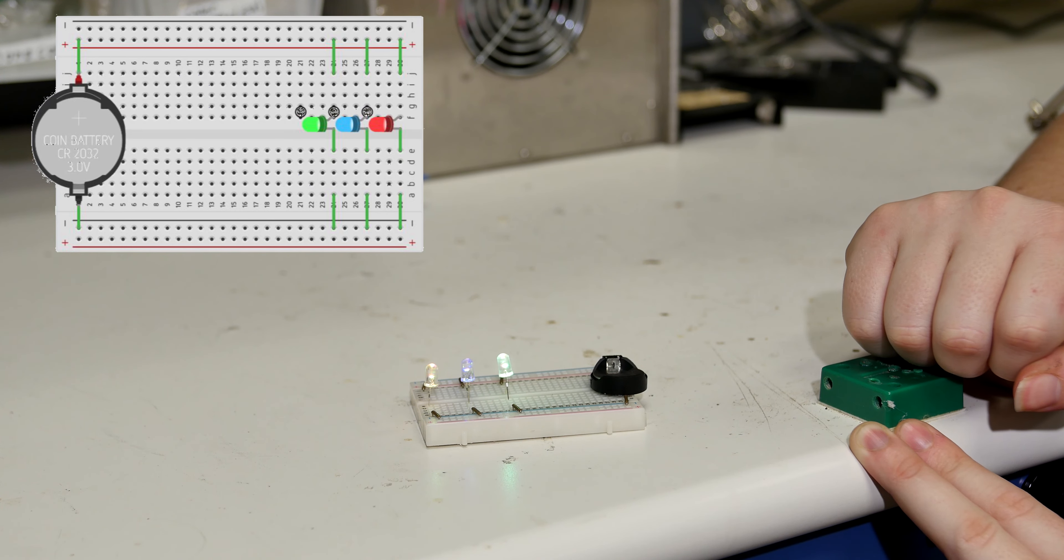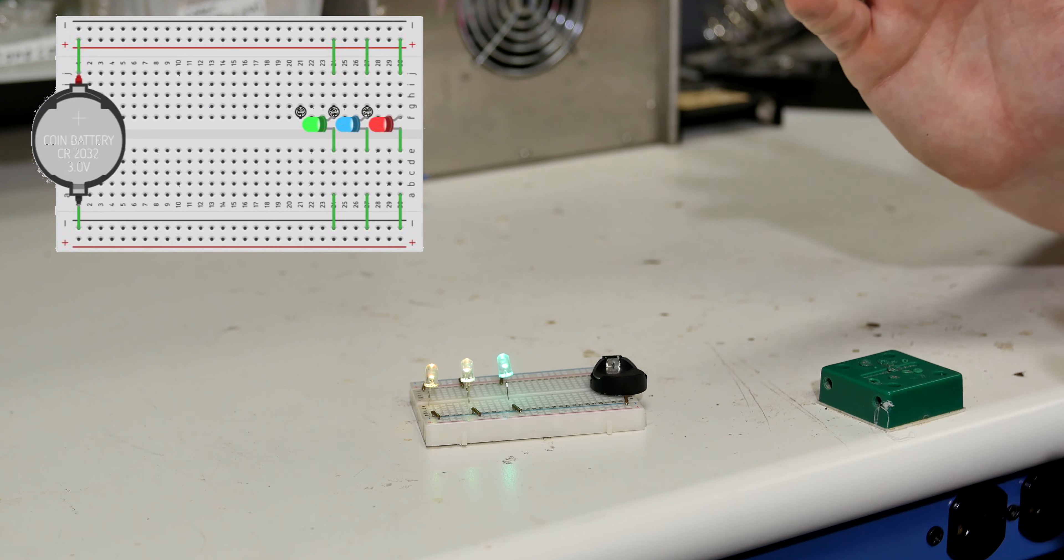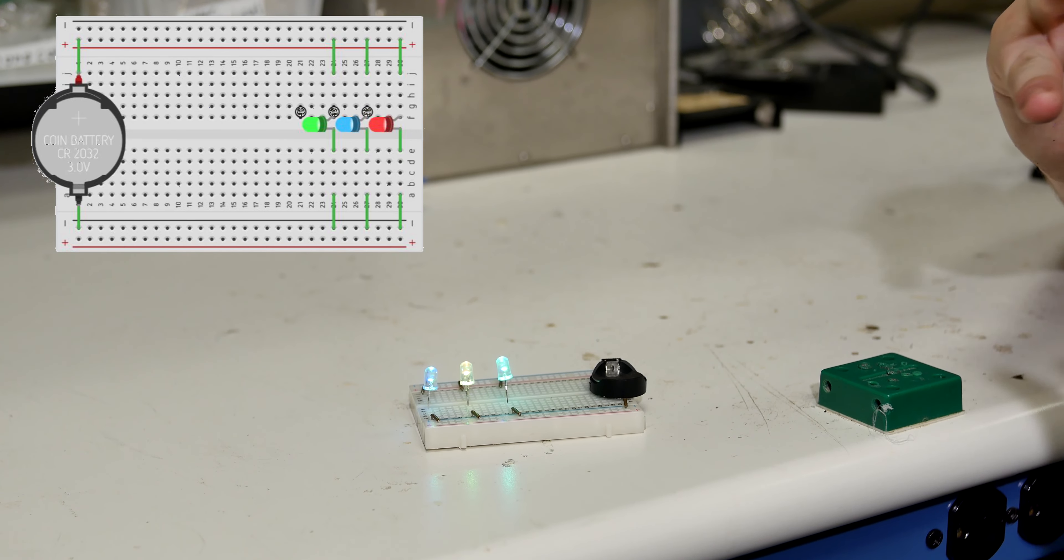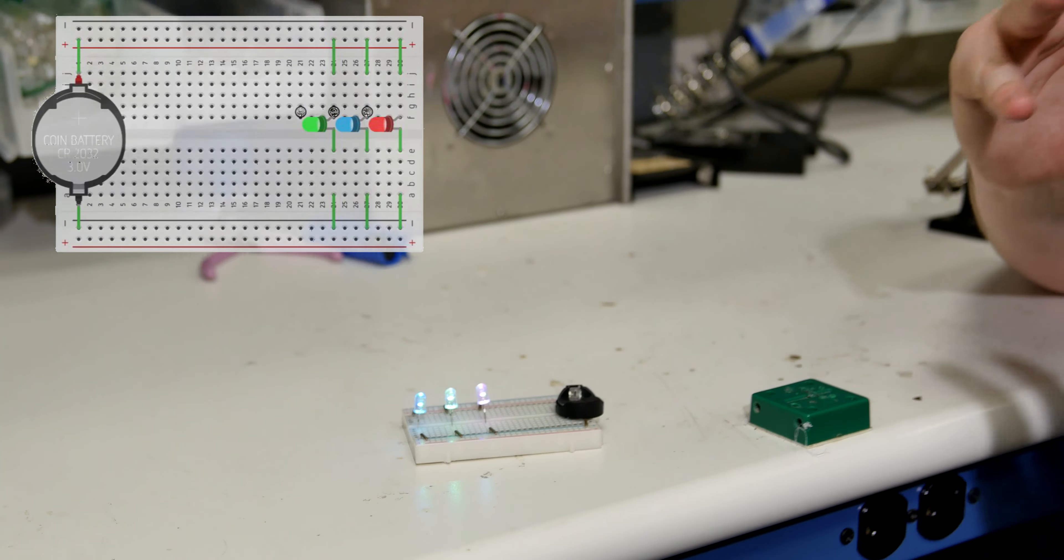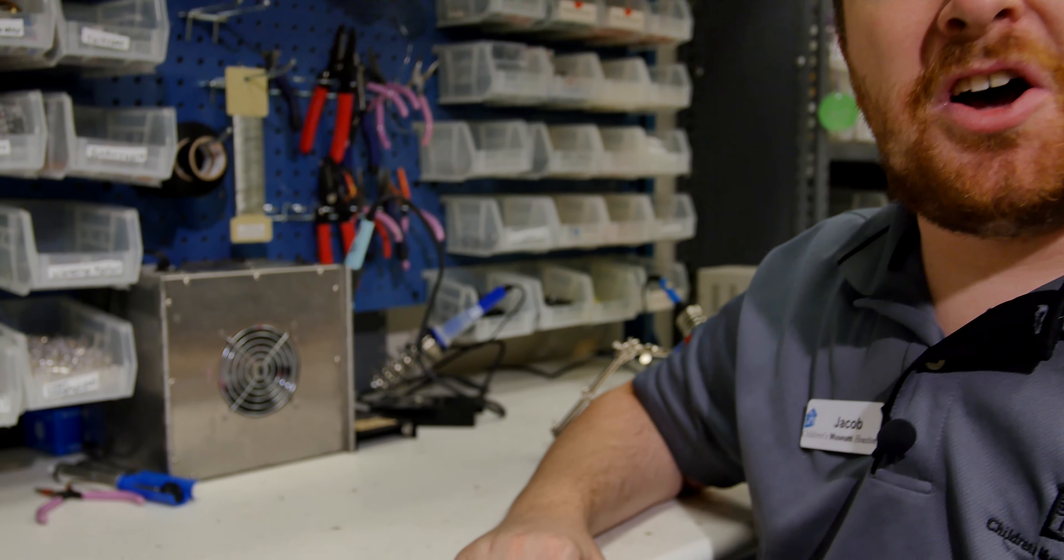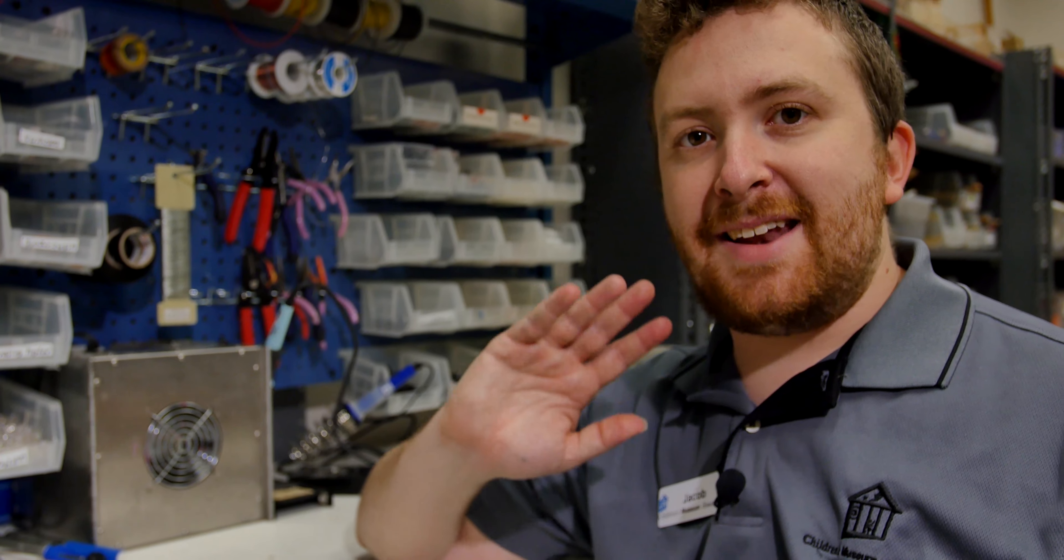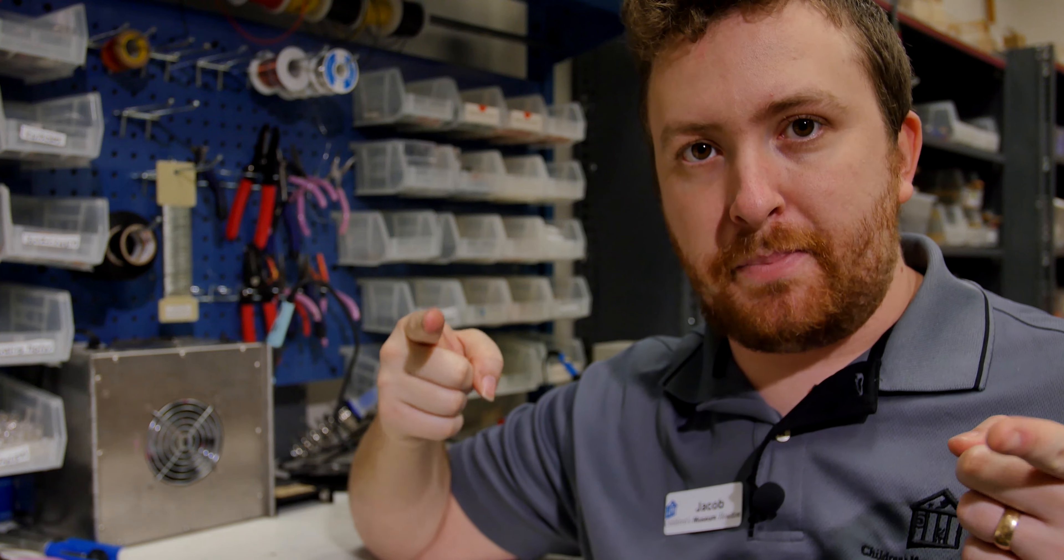You just kind of have to get used to which holes are connected to which thing and you can start kind of prototyping your own circuits with these breadboards. So once again, my name is Jacob from Children's Museum Houston. We are in the Chevron Maker Annex and that is what breadboards do. Thank you for joining me and I'll see you next time. Bye.